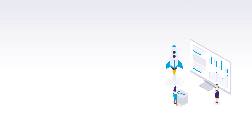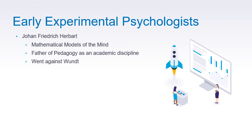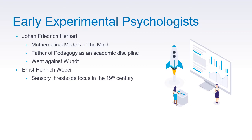Aside from Galton, there are also other early experimental psychologists. Johann Friedrich Herbart is one of them — he introduced mathematical models of the mind. He is the father of pedagogy as an academic discipline and held beliefs quite different from Wundt. There is also Ernst Heinrich Weber, who focused on sensory thresholds during the 19th century and pioneered the just noticeable difference, or JND, in experiments.